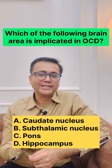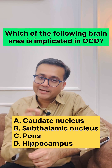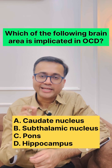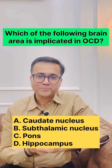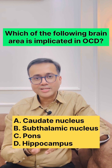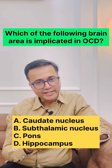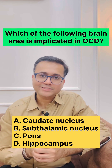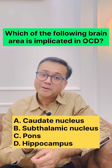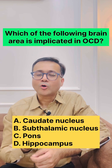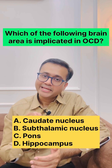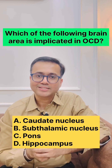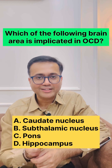Which of the following areas is implicated in OCD? Options are: A) Caudate Nucleus, B) Subthalamic Nucleus, C) PONS, D) Hippocampus. Write your answers in the comment section below.